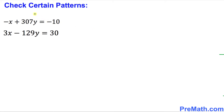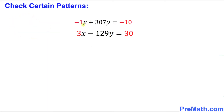We are going to check certain patterns in this system of equations. Here I have highlighted these numbers in red. You can see we have the coefficients of the x variables on this side and the red numbers on this side as well. And here is the pattern we are going to be looking at.